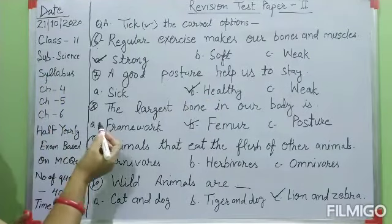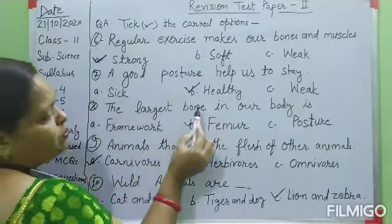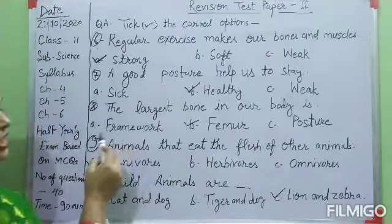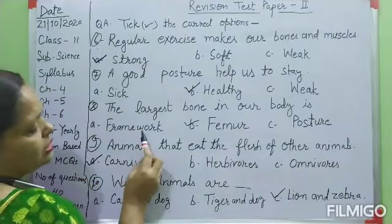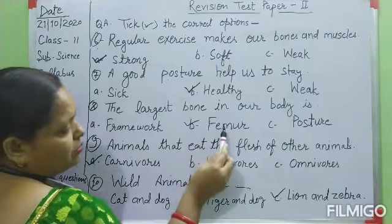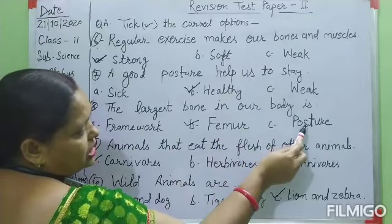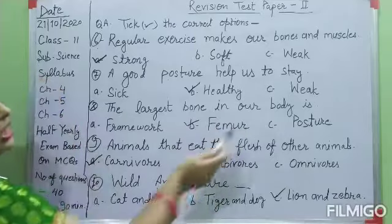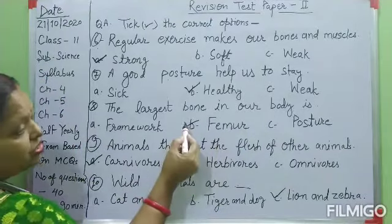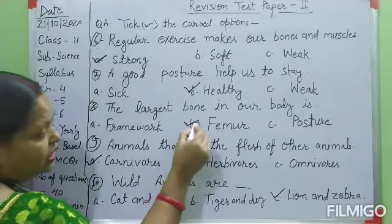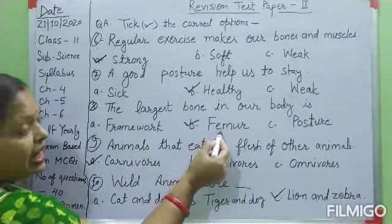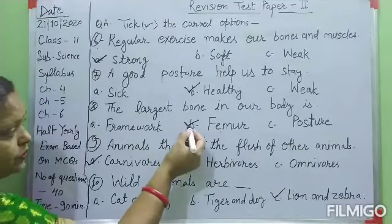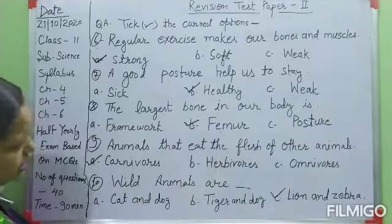Question number eight: the largest bone in our body is — A: framework, B: femur, C: posture. The largest bone in our body is the femur. It is found in our leg — it is the thigh bone. You have to choose option B — femur.